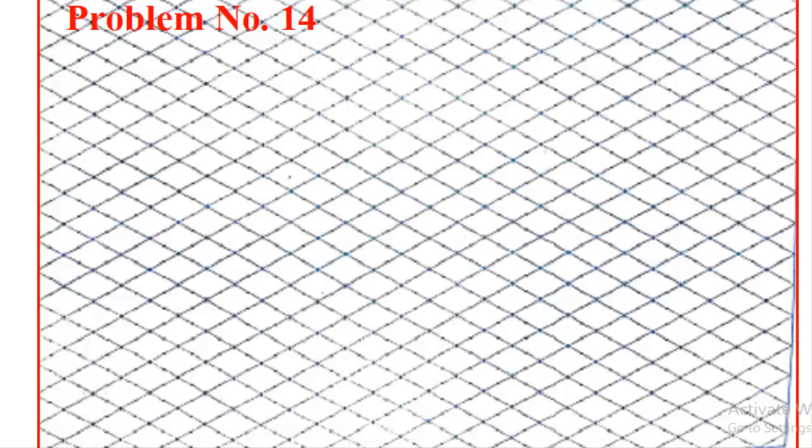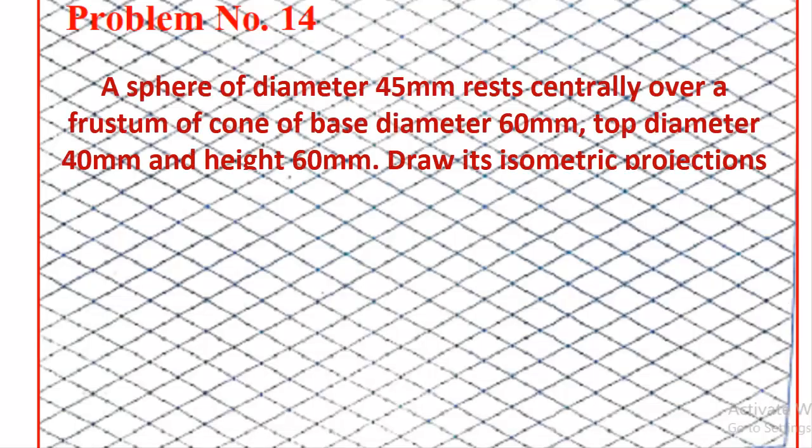Let me discuss problem number 14. The question is: a sphere of diameter 45 mm rests centrally over a frustum of a cone of base diameter 60 mm, top diameter 40 mm, and height 60 mm. Draw its isometric projections.